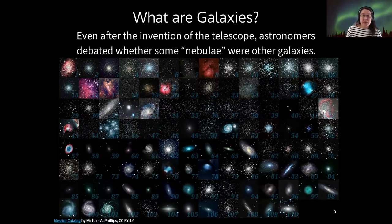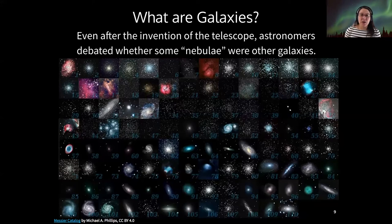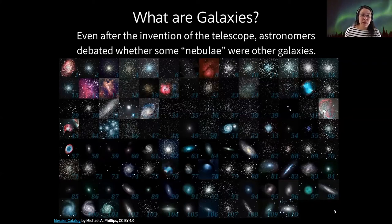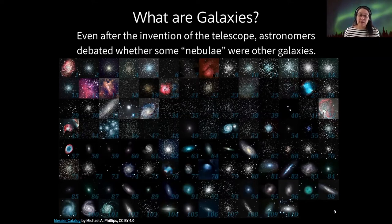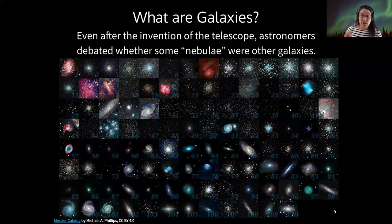Once the Messier catalog was developed, astronomers started to notice that some of these looked like groups or clusters of stars. Lots of the Messier objects are star clusters, but those are not full galaxies — they're smaller than galaxies and exist within galaxies, even within our own Milky Way. Other nebulae are actually just big collections of dust and gas, so those are not galaxies either. But some do look like galaxies — large collections of stars, gas, and dust held together by gravity.